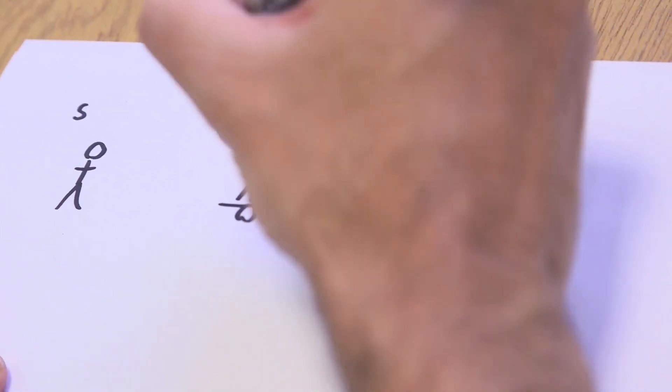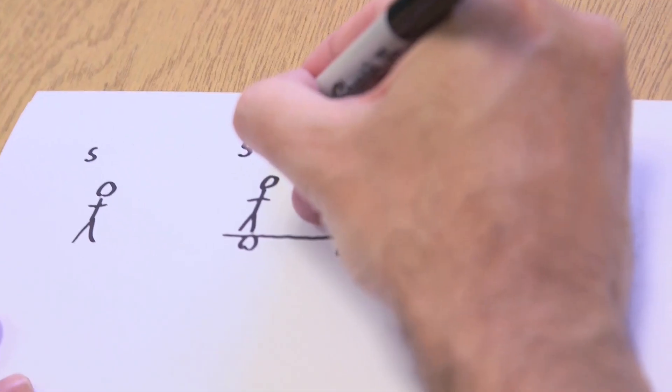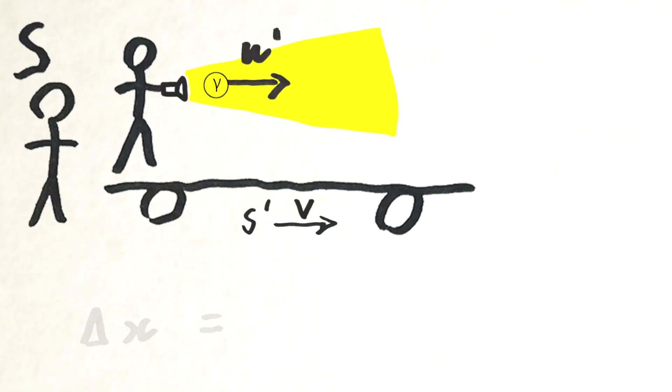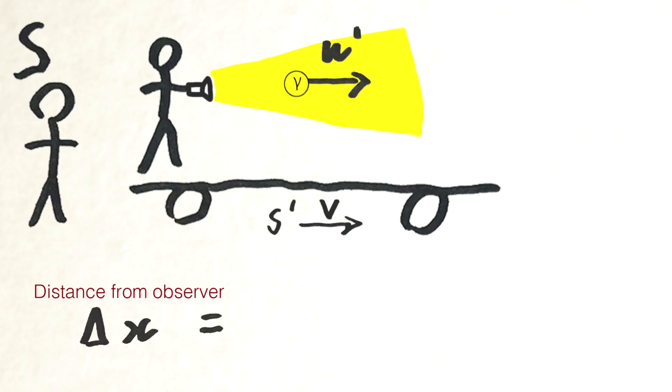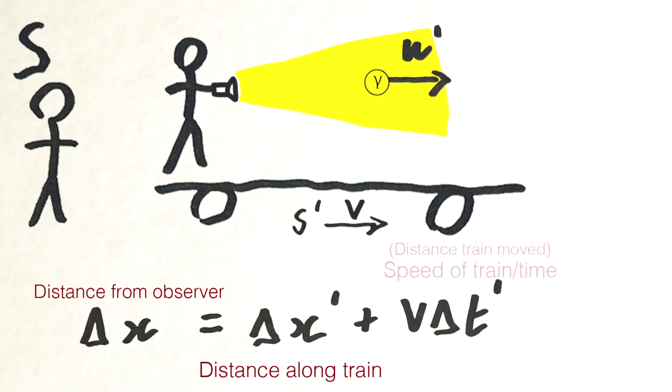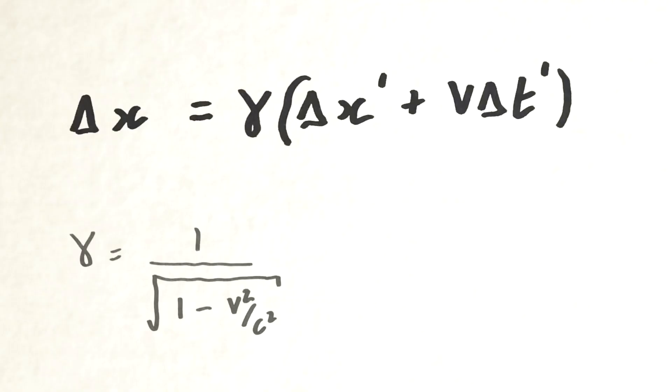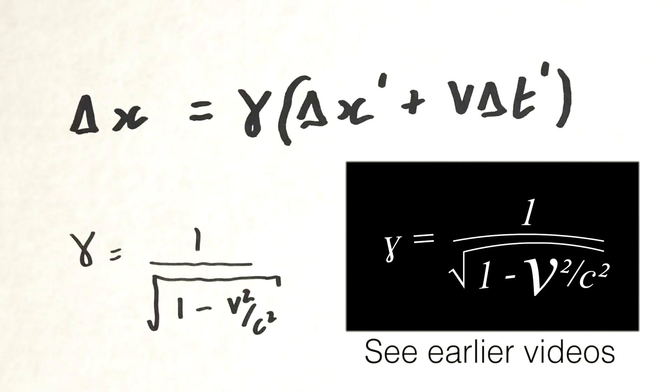We've got somebody on the train moving along at some speed V. Now, the Galilean transformation we had before is modified by special relativity, which introduces these factors of gamma. The Galilean transformation is modified by an extra factor of gamma in front of it. Gamma is 1 over the square root of 1 minus v squared over c squared — there's a whole series of videos about gamma if you wish to watch them.